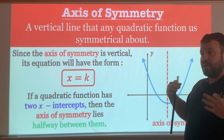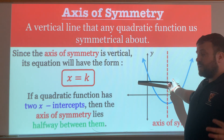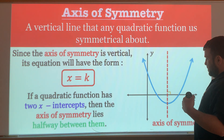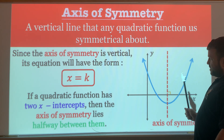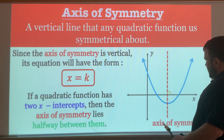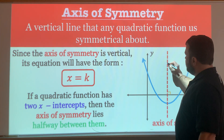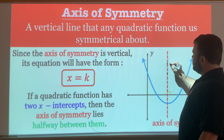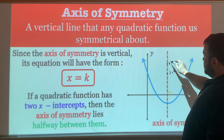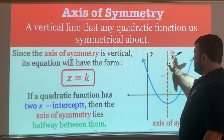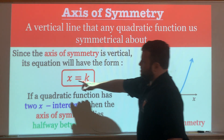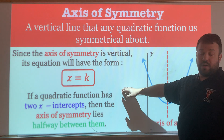The slope of a vertical line is actually undefined, not zero. All vertical lines have an undefined slope. Remember: horizontal lines have a slope of zero, vertical lines have an undefined slope. If I took two points — say (6, 2) and (5, 2) — my slope would be 6 minus 5, which is 1, over 2 minus 2, which is 0, so it's undefined. That's why the form is x equals k. If it were a horizontal line, it would be y equals k.